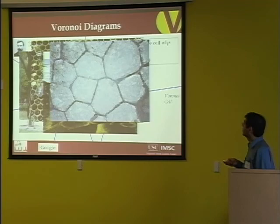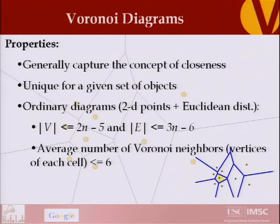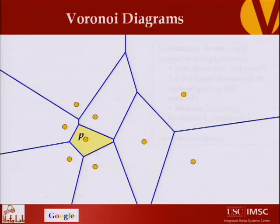Now let's go to the properties. Generally, Voronoi diagrams capture the concept of closeness, based on a distance and the objects. For a given set of points or objects, they are unique. Ordinary Voronoi diagrams are those in which the points are 2D or ND points and the distance is Euclidean — the length of the line connecting those two points. The complexity of the Voronoi diagram is order N, meaning the number of vertices and edges is order N. The average number of Voronoi neighbors of each cell is less than or equal to 6, averaged over all points, for any distribution.